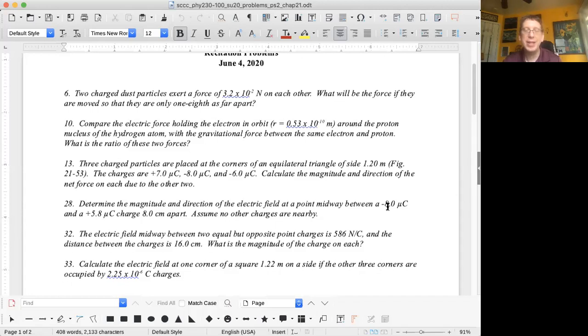And the last problem, calculate the electric field at one corner of a square, 1.22 meters on a side. If the others are occupied by 2.25 times 10 to the negative 6 coulomb charges. So you have three charges on different sides of a square. You want to find the electric field at the fourth corner of the square.